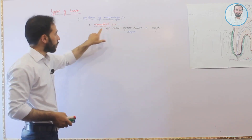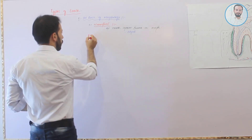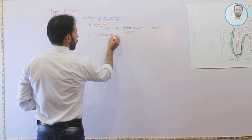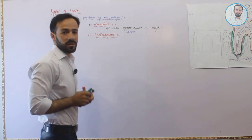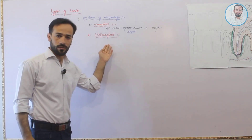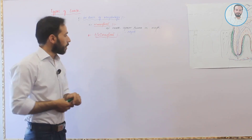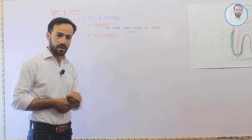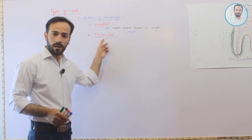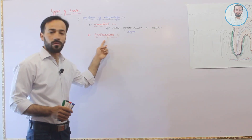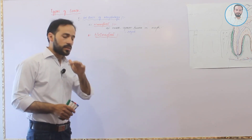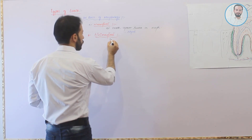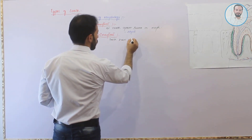The second type on the basis of morphology is heterodont. In this class we have organisms which have sets of teeth different from each other. Examples of heterodonts include humans — we human beings have heterodont teeth, meaning teeth have different morphologies.